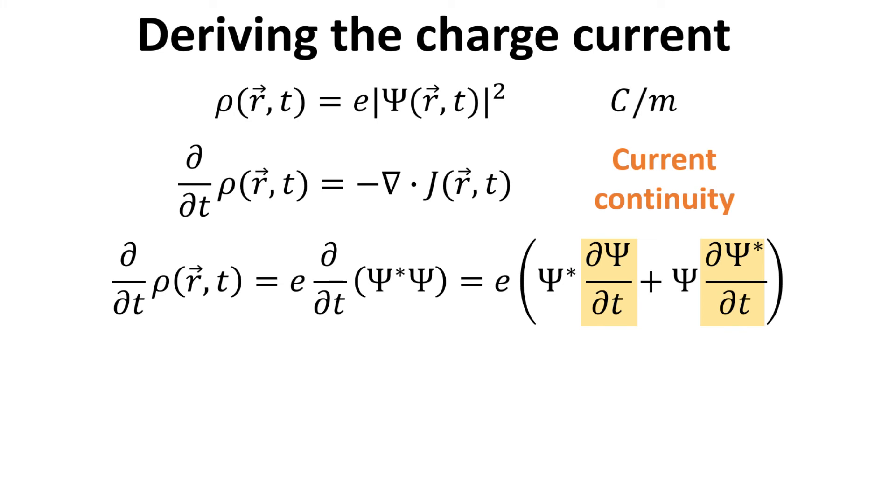Starting from the left-hand side of the current continuity relation, we can write the rate of change of the charge density in terms of the wave function psi. We see here the appearance of the terms given by the time derivative of the wave functions as highlighted.